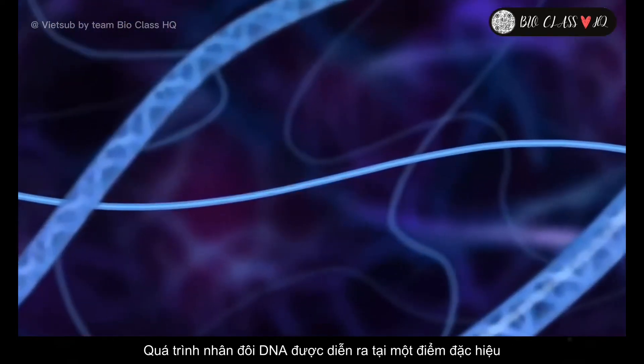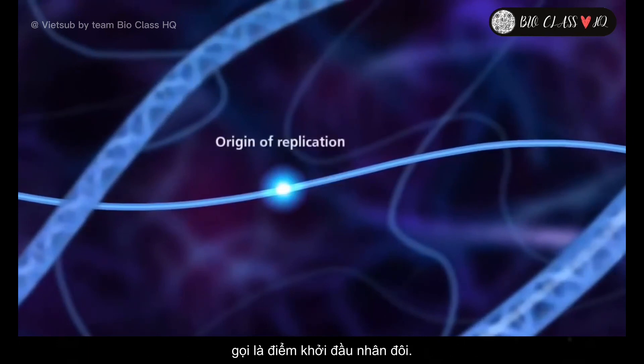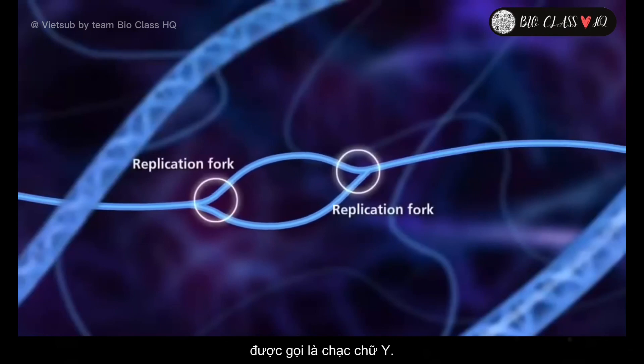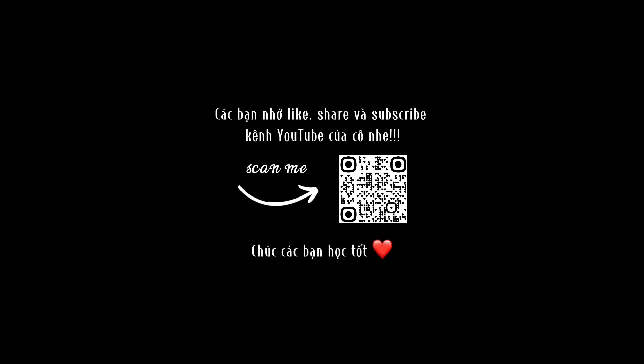DNA replication will begin at a specific area of the molecule called the origin of replication. The origin of replication denotes the area of active replication called the replication fork.